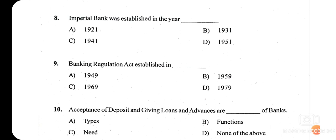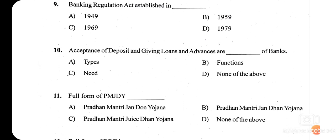Question ten: acceptance of deposits and giving loans and advances are dash of banks. The right answer is option B — functions. Accepting deposits and giving loans and advances are the functions of the bank.